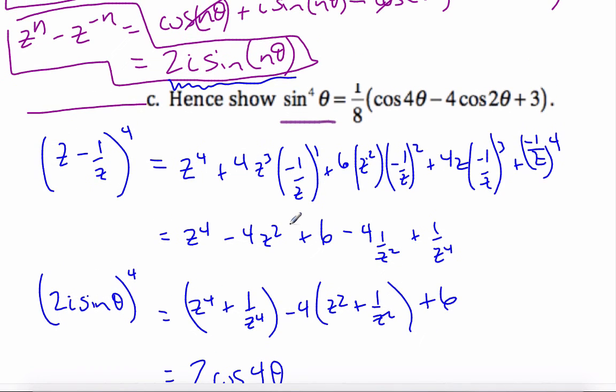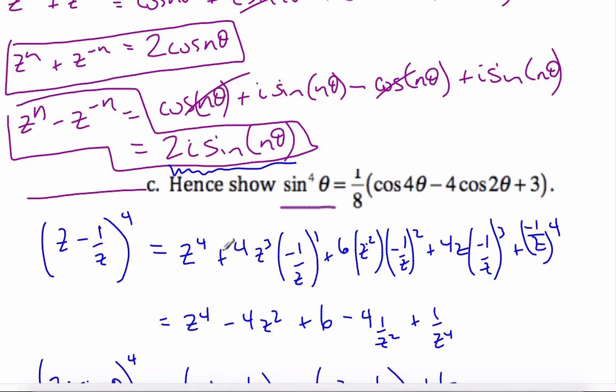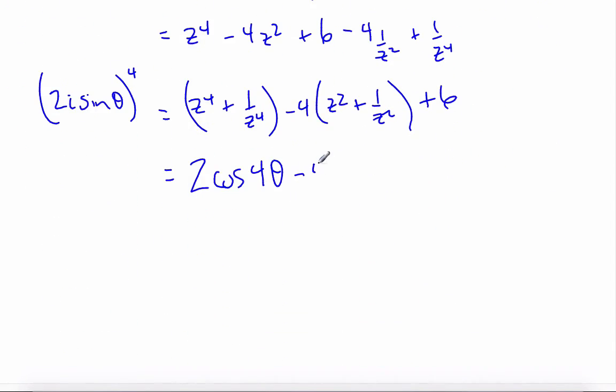Let me make sure I wrote that right. And indeed, it is 2 cosine 4 theta minus 4 times 2 cosine, well this time it will be 2 theta, plus 6. I'm also going to start to simplify this side here. 2i to the power of 4 is 16i to the 4th sine to the 4th theta.